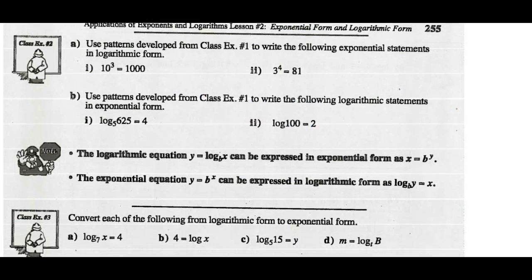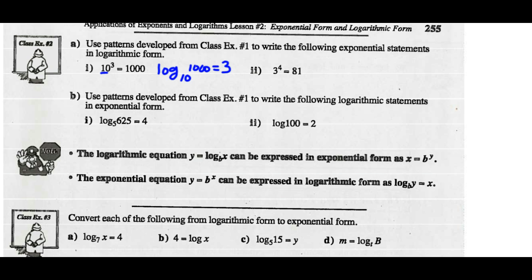Let's use the patterns from the last example to write the following exponential statements in logarithmic form. The base of my power is 10, so I should write the base of my logarithm as 10 as well. Remember that a logarithm equals an exponent. So the log of 10,000 base 10 should equal the exponent 3. For part 2, the logarithm has a base of 3 because the power has a base of 3. Therefore, the log of 81 equals an exponent of 4 — so log of 81 base 3 equals 4.